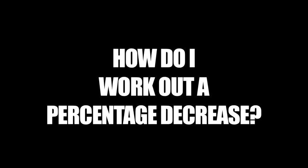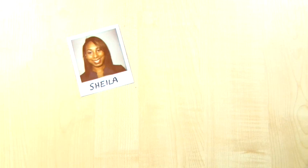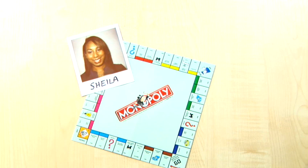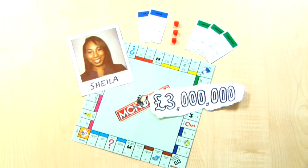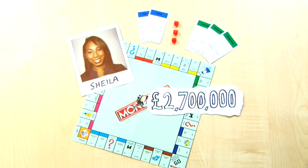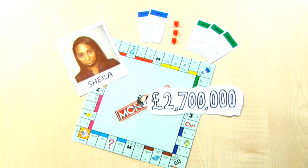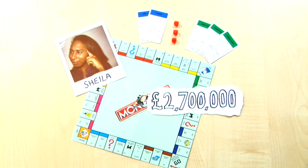How do I work out a percentage decrease? This is Sheila. She's a property tycoon who's just had her housing stock revalued. When she last had her portfolio valued, it was worth £3 million, but is now worth only £2,700,000, a loss of £300,000. But Sheila wants to know, what sort of a percentage decrease this is?